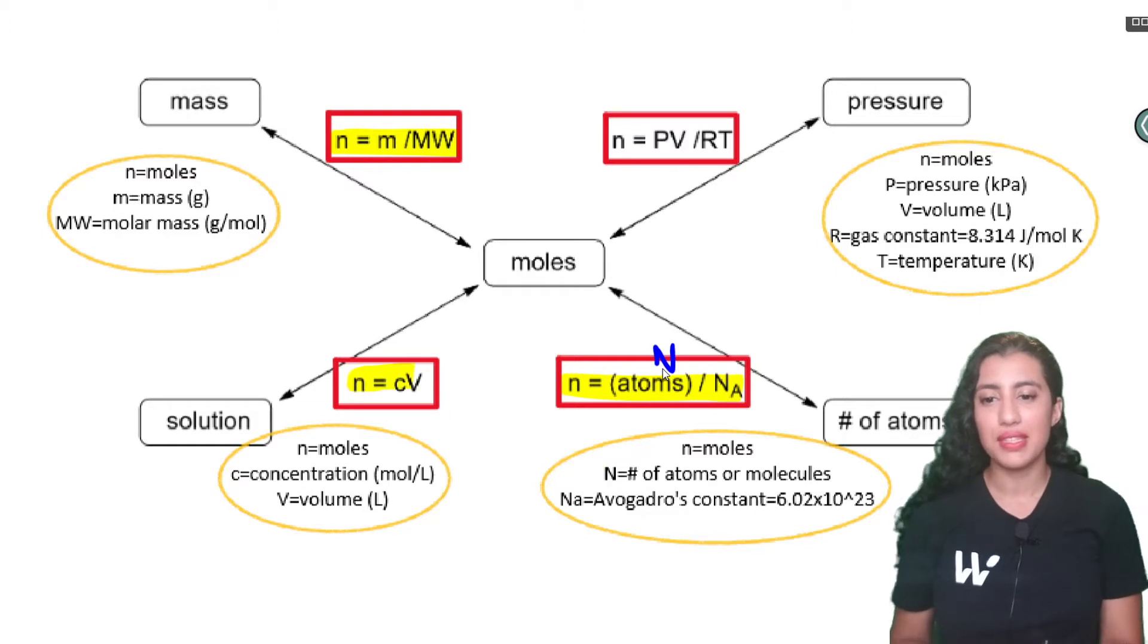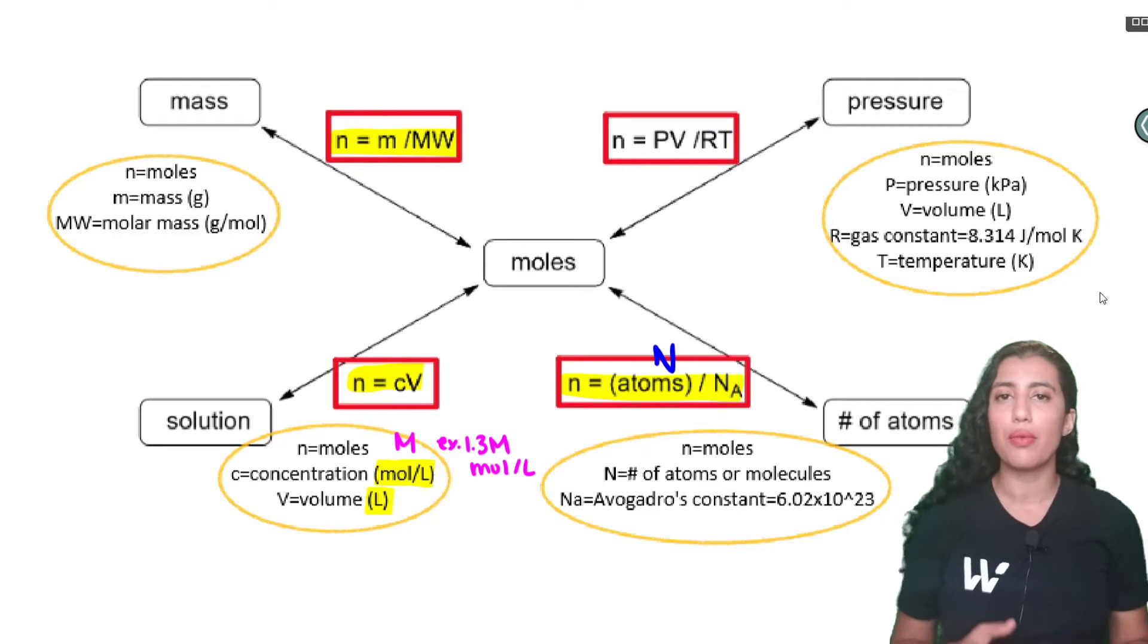The first one is n is equal to c times v where n is still moles but c is your concentration in moles per liter and v is volume in liters. Now it makes sense that v is volume in liters because if you take moles per liter multiplied by liters, the liters will cancel out and you'll be left with moles. One other thing I wanted to point out here is that sometimes you might see the units big M. So for example 1.3 big M. That is another way of writing moles per liter so just keep in mind that when you see either of those it means they're talking about a concentration.